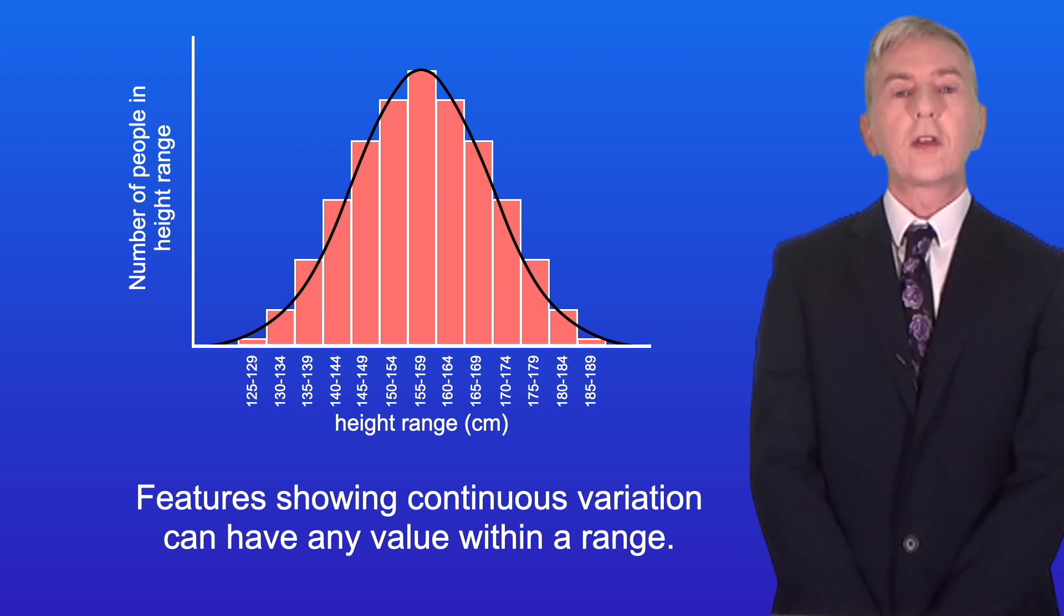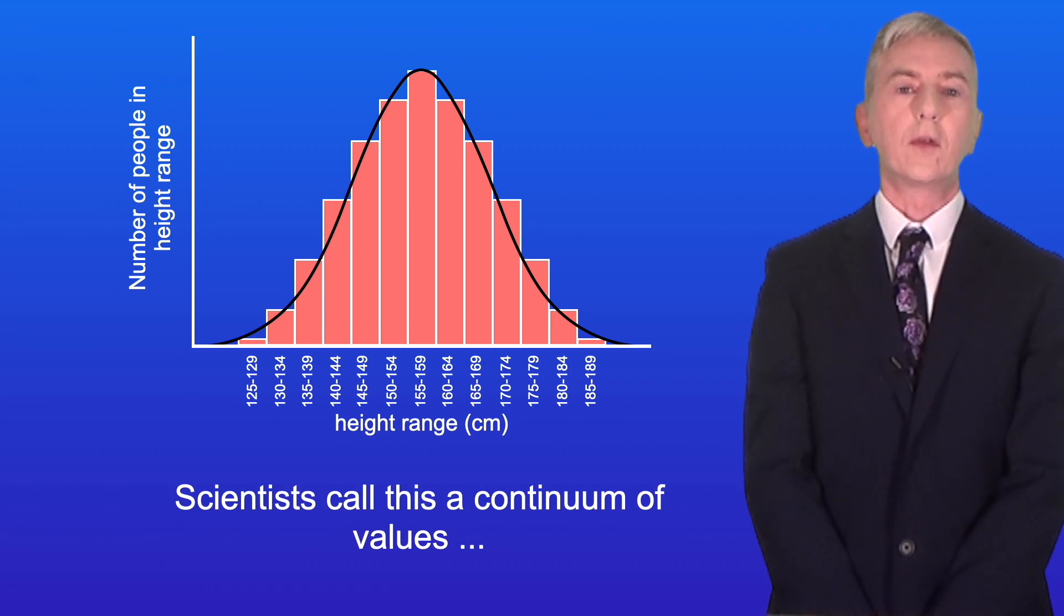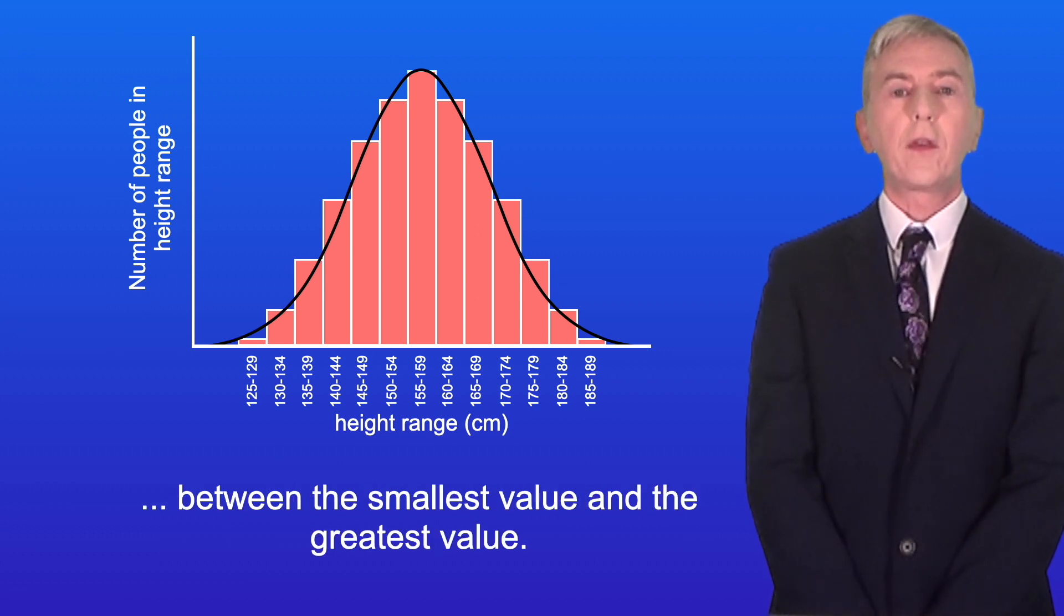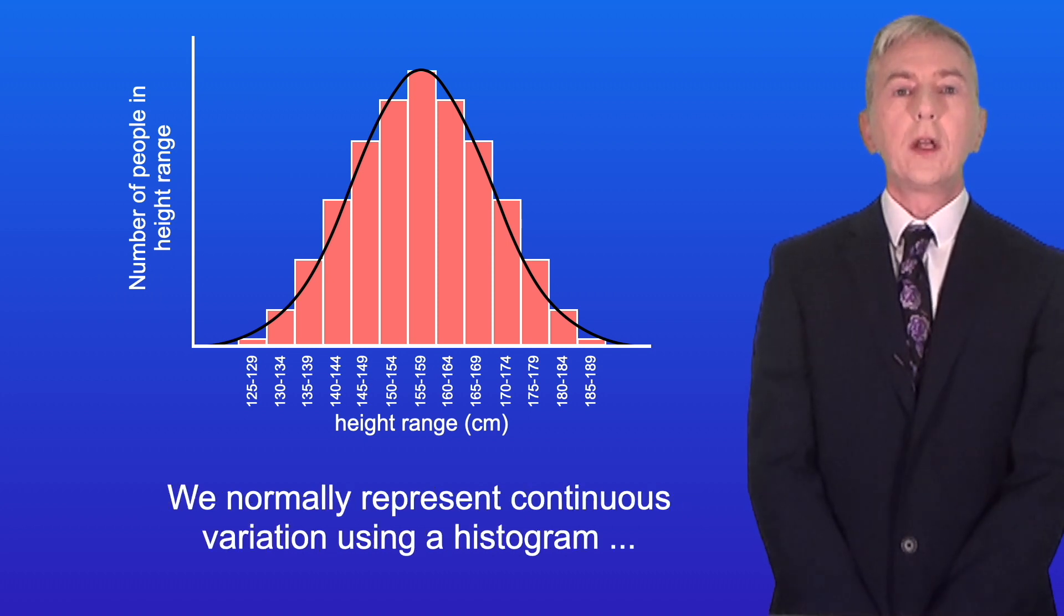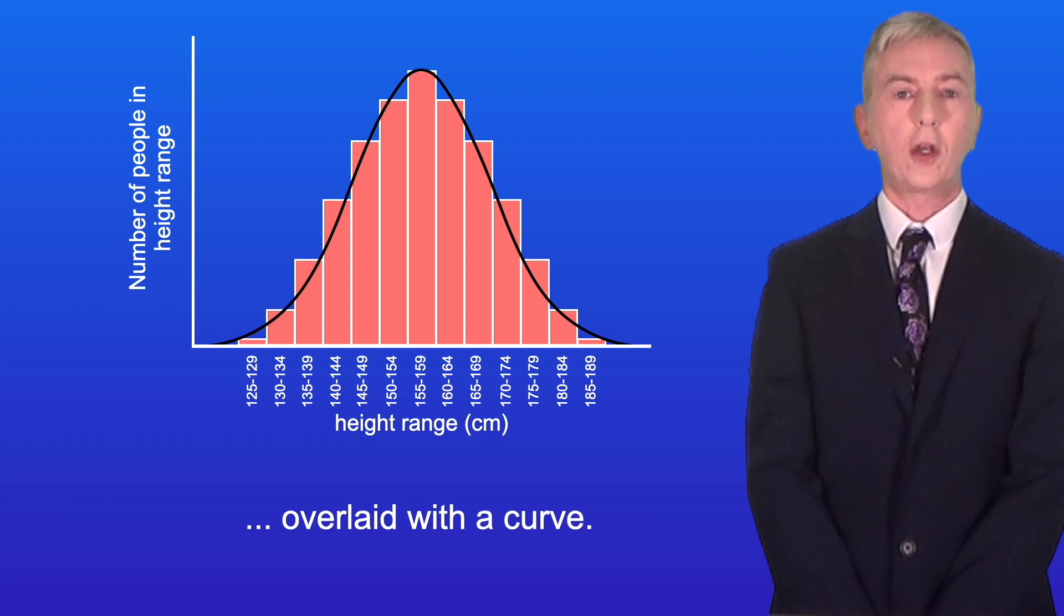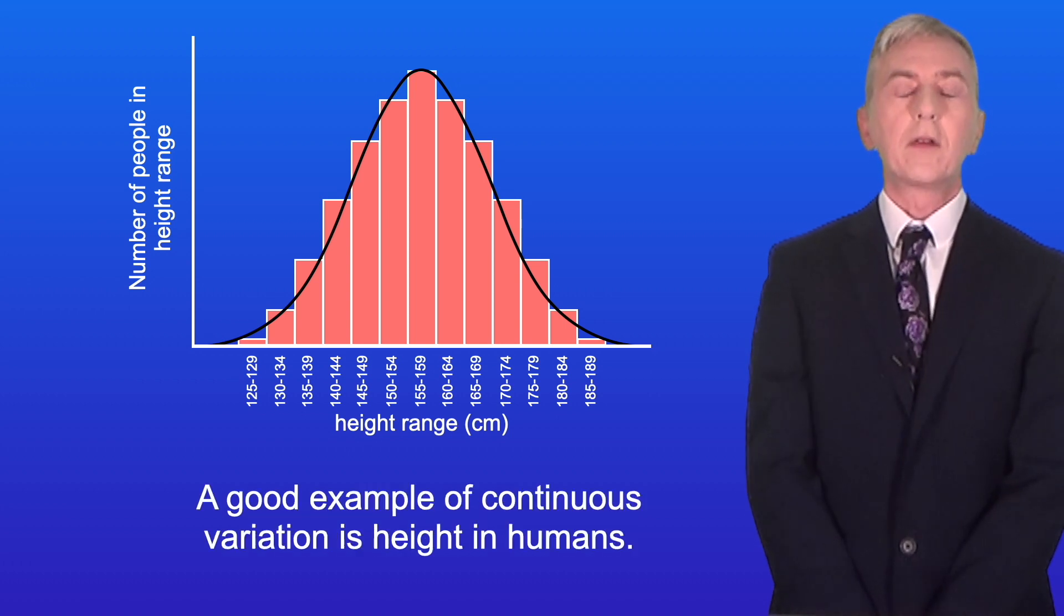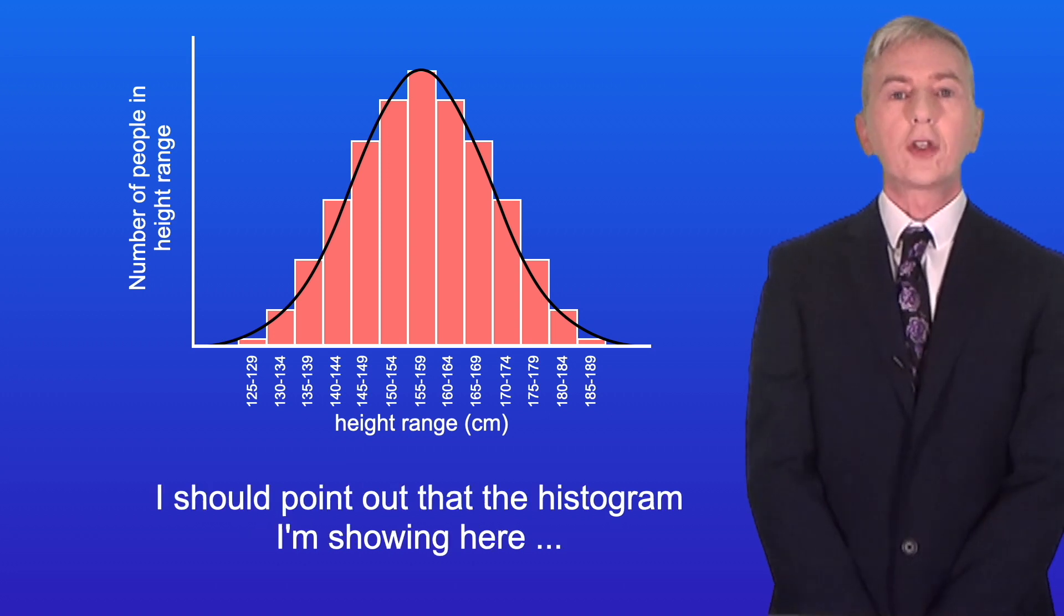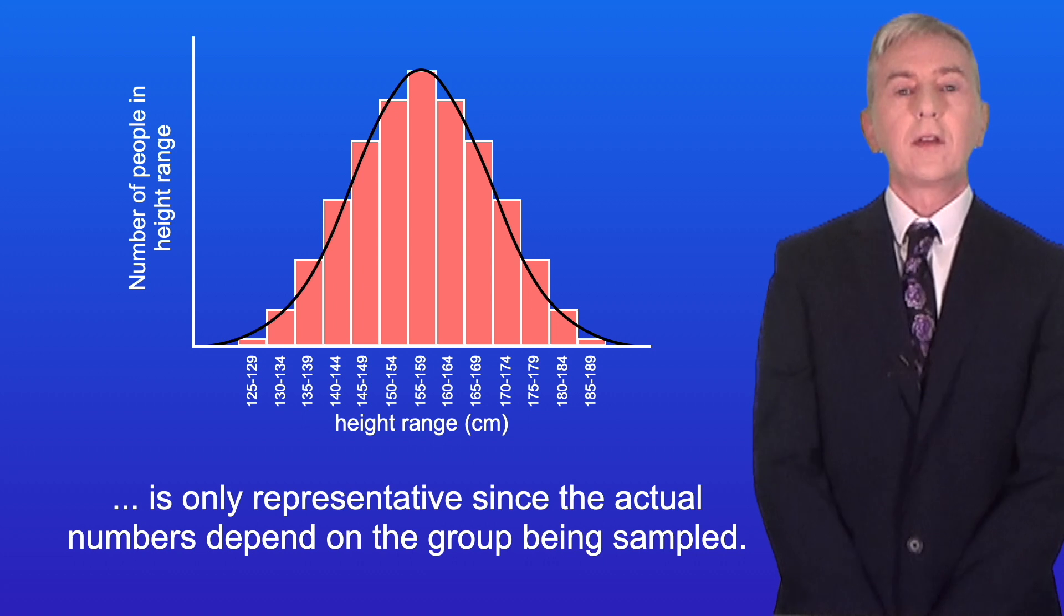Now features showing continuous variation can have any value within a range. Scientists call this a continuum of values between the smallest value and the greatest value. We normally represent continuous variation using a histogram overlaid with a curve. A good example of continuous variation is height in humans. Now I should point out that the histogram I'm showing here is only representative since the actual numbers depend on the group being sampled.